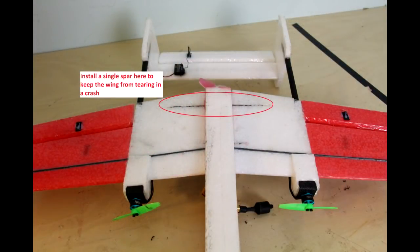One thing I noticed when flying the airplane is if I crashed hard, the back of the wing would tear and thus I added this spar later and it seems to prevent tearing of the wing.